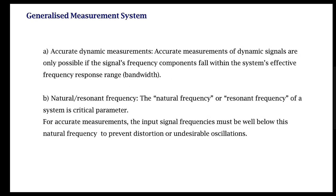Accurate measurements of dynamic signals are possible only if you know the frequency characteristics — that is, the bandwidth of the system. Ideally, you need to match the bandwidth of the measurement system to the bandwidth of the desired input signals. You also need to consider the natural frequency or resonant frequency of the system, because input signal frequencies should be well below this value; otherwise, you will have undesirable oscillations caused by resonance.